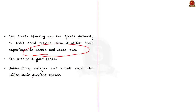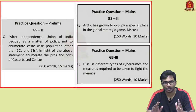The article also mentions alternatives. Olympic winners can venture into business, which will employ more sports persons and develop their respective sports. They can set up academies to train sports persons. The Sports Ministry and Sports Authority of India could recruit them at both central and state levels, utilizing their experience in their field of specialization. They can be appointed to universities, colleges, and schools, which can better utilize their services. Aspirants can take any stand on this editorial but must give factually correct, well-argued answers.